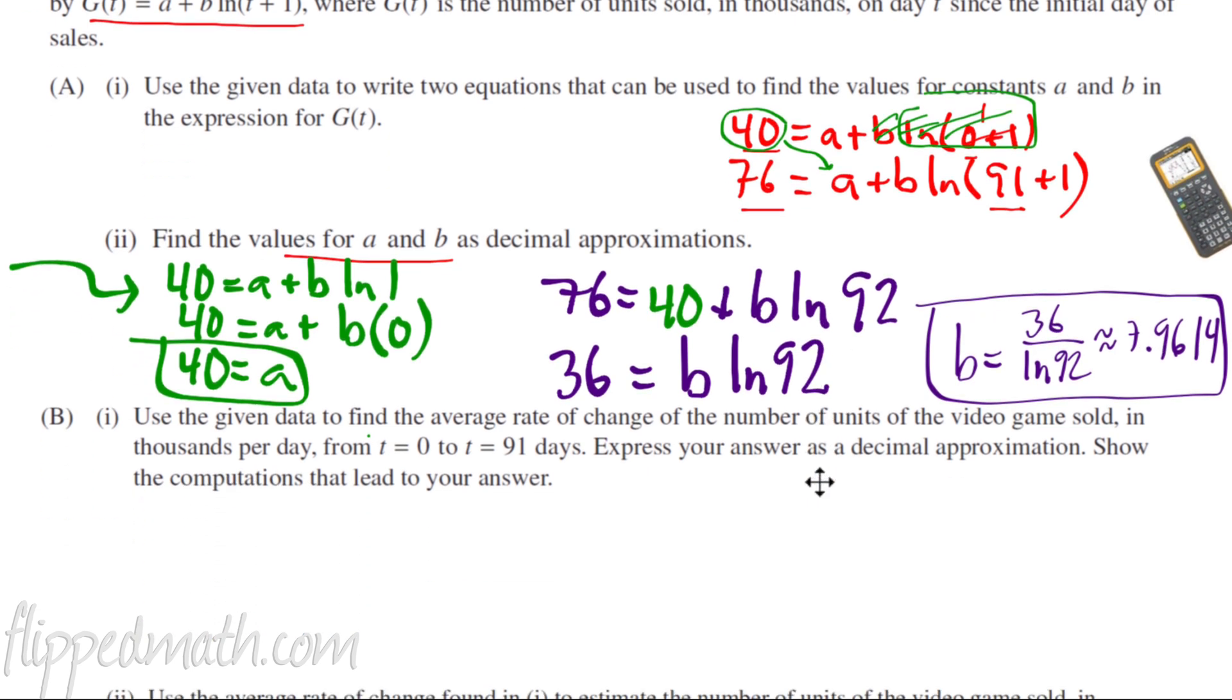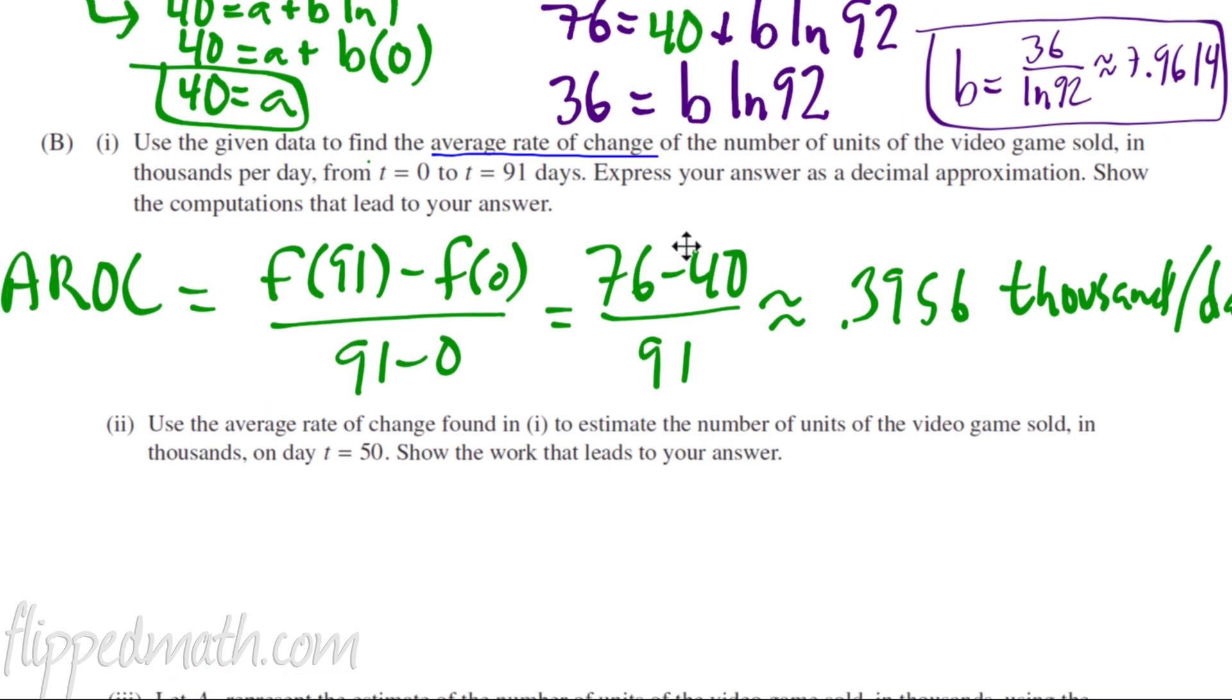On to part B. Use the given data to find the average rate of change. People. That is just another name for the slope. So we need to use the slope formula. So here's how we write it out. The average rate of change, and you can't abbreviate that on this question, but that equals F of 91. I'm showing that I need the function value minus the other function value all over the X values. Remember, Y goes on top, X on the bottom. And then I substitute in those values, and I get approximately equal to 0.3956. Remember, a unit is thousands per day, thousands of units per day, but you don't need that unit according to the scoring guide. You can just have that number right there, 0.3956.